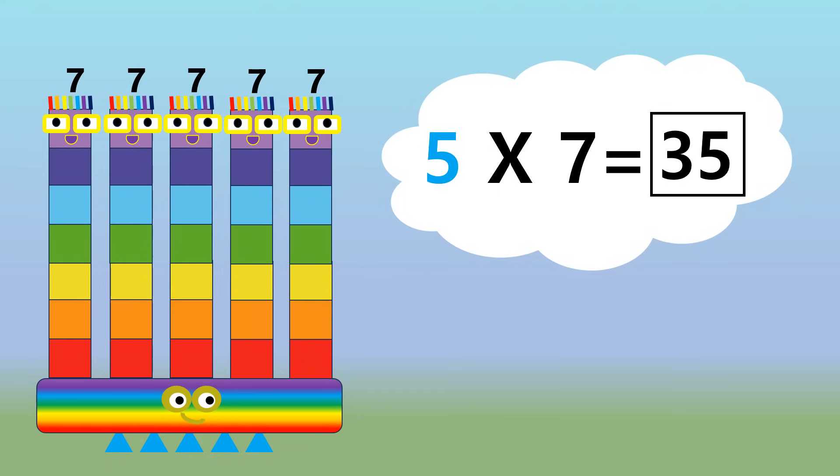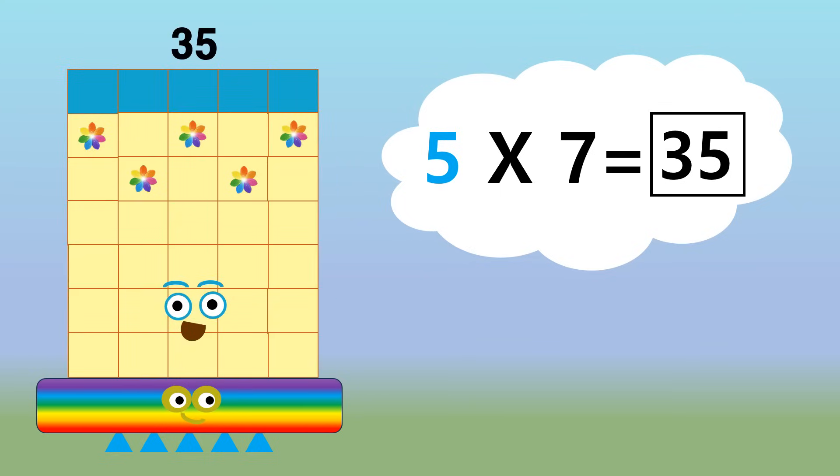5 7s are 35. 35. Who do you think should be next to arrive?